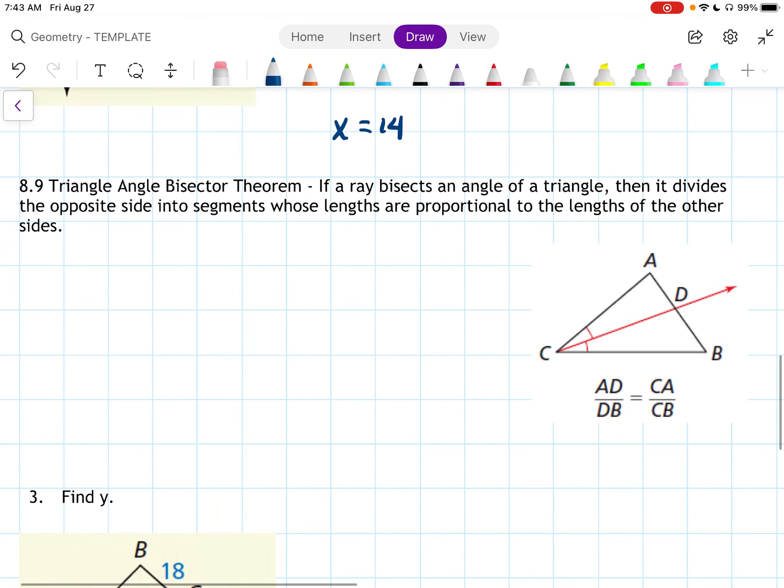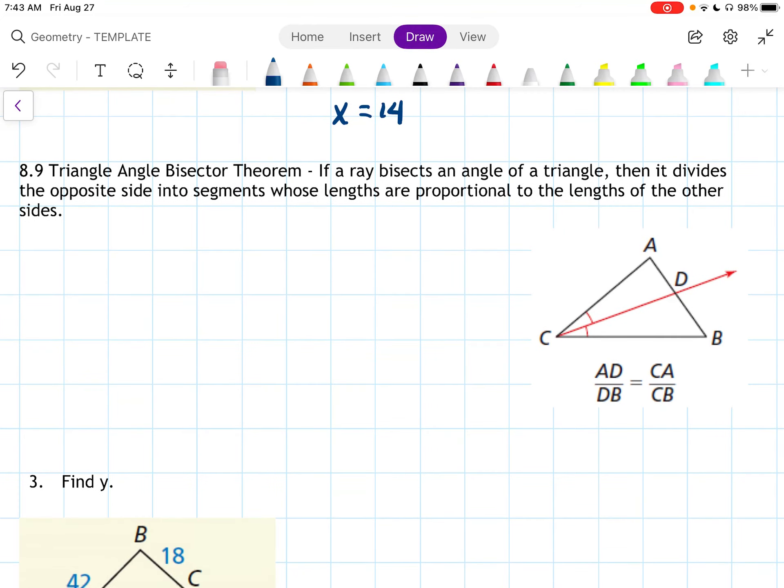Theorem 8.9. The triangle angle bisector theorem. If a ray bisects, cuts in half, an angle of a triangle, then it divides the opposite side into segments whose lengths are proportional to the lengths of the other sides. So let's look at this picture here and see what that means. Angle C here is bisected, right? We see the little swoops right there. And it tells us that the opposite side, AB, is cut.